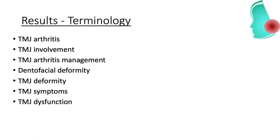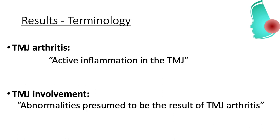It is beyond the scope of this presentation to go over all of the seven definitions. However, let's take a look at the important relationship between the terms TMJ arthritis and TMJ involvement, as this is an area of confusion to many of us. TMJ arthritis is now defined as the presence of active inflammation in the TMJ. In contrast, the less restrictive term TMJ involvement has also been introduced, defined as abnormalities presumed to be the result of TMJ arthritis.